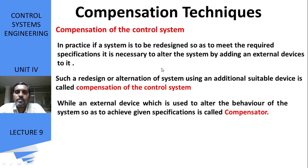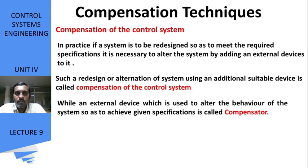If a system is to be redesigned so as to meet the required specifications, it is necessary to alter the system by adding external devices to it. Initially the phone was of a very huge size, now it has been reduced in size, and the applications have been improved. Such a redesign or alteration of the system using an additional suitable device is called compensation of the control system.